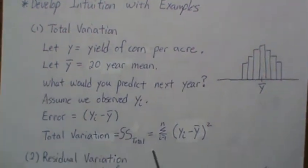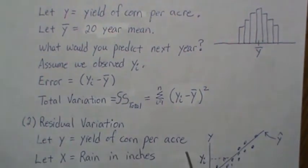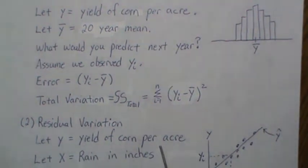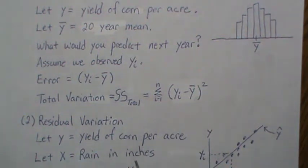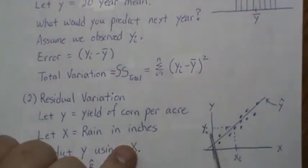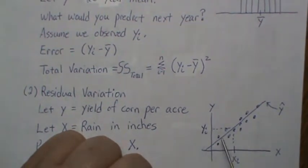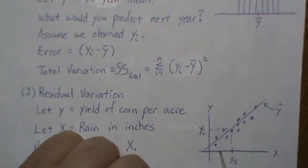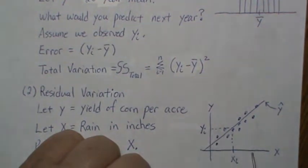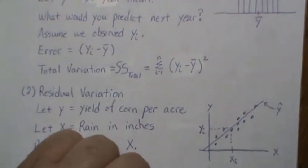Next we're going to look at residual variation. Let's assume again that Y is the yield of corn per acre, but now we have X, which is the rain in inches for that season. Here on the x-axis is rain in inches, and on the y-axis is yield of corn. If it doesn't rain much we don't see much yield; if it rains more we see more corn — there's a linear relationship.